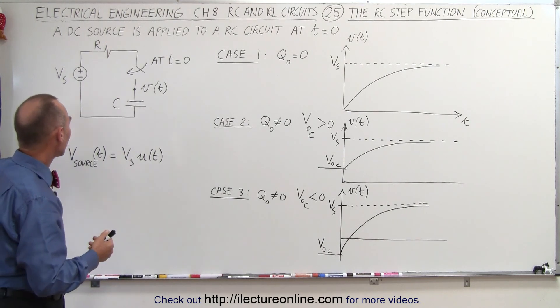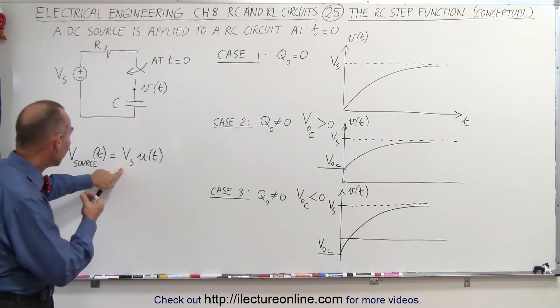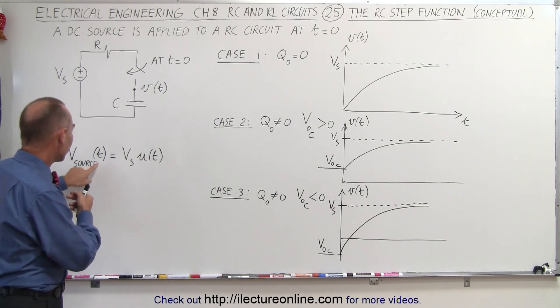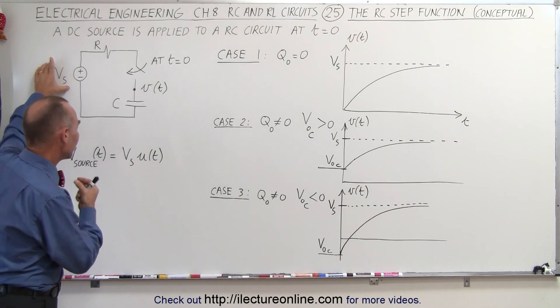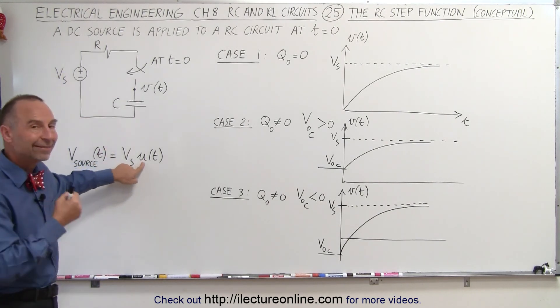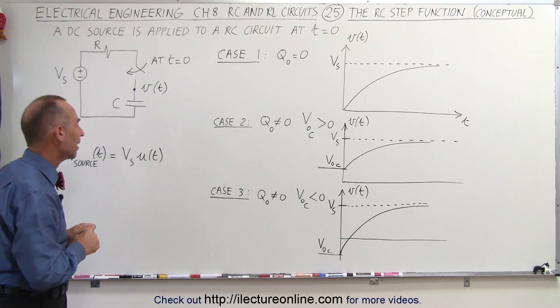So what happens is, once we close the switch, then the voltage is applied. We can represent the voltage at the source as a function of time as being the constant voltage source V_s times the step function that is one at time equals zero and zero prior to that time.